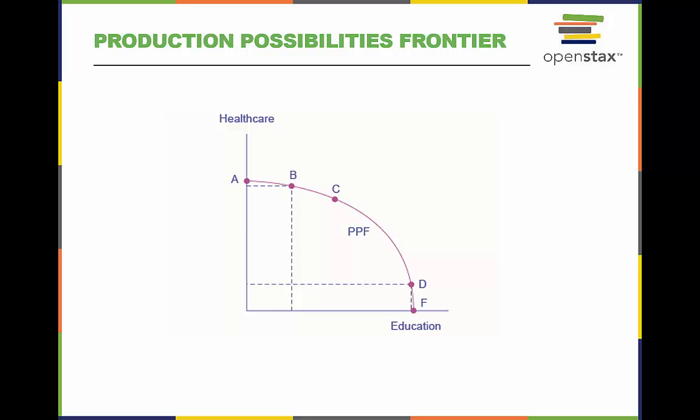This production possibilities curve, which is also called a production possibilities frontier, shows a trade-off between devoting social resources to health care or devoting them to education.